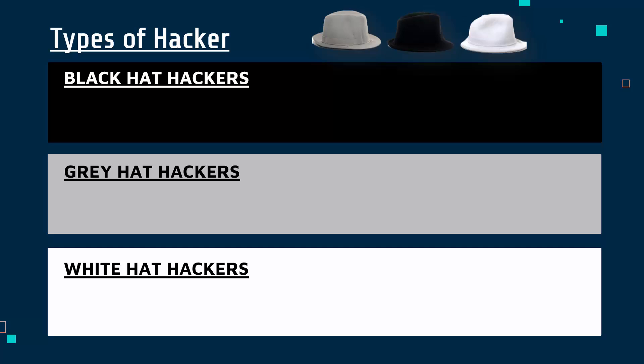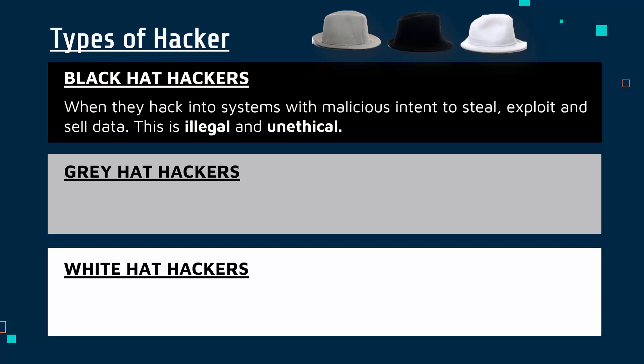What is malicious and nasty is a black hat hacker — these are our more stereotypical hackers, where they are breaking into systems with malicious intent. They're deliberately trying to steal, exploit and sell data. This would be illegal according to the Computer Misuse Act, and also unethical. Ethics are about what we think as a person is right or wrong, which can be different to laws. But black hat hackers are these criminals who are doing it illegally and unethically.